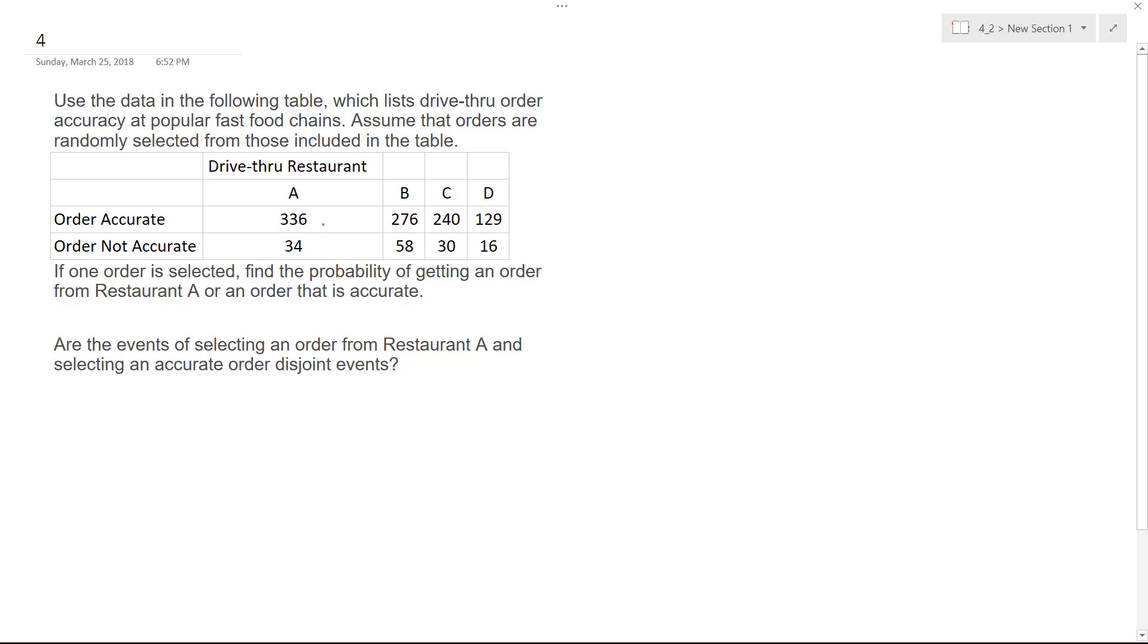So, this assumes across all restaurants. Just getting an order from restaurant A includes everything here, including inaccurate for A. And then or an order that's accurate includes all the restaurants, but all of them that are accurate.